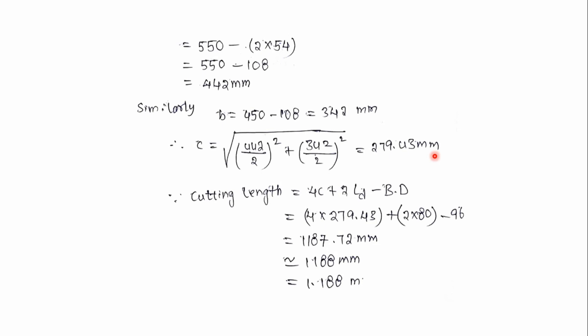Substitute these three values into the cutting length formula, that is 4c plus 2ld minus bend deduction. Then you will get cutting length of 4 multiplied by 279.43 plus 2 multiplied by 80 minus 96.